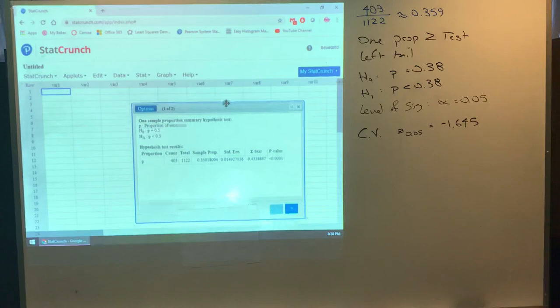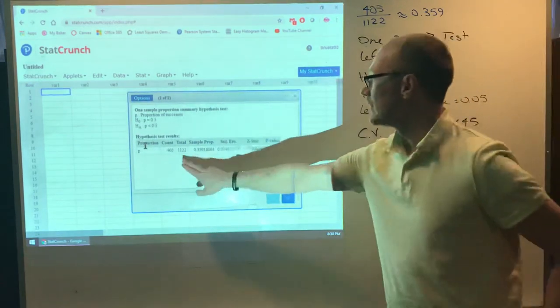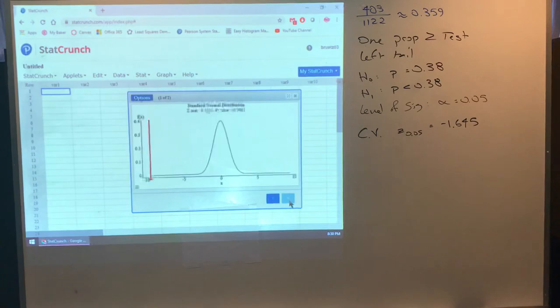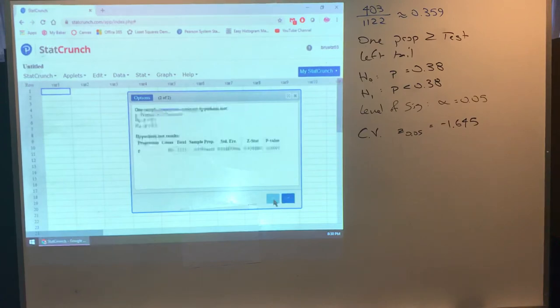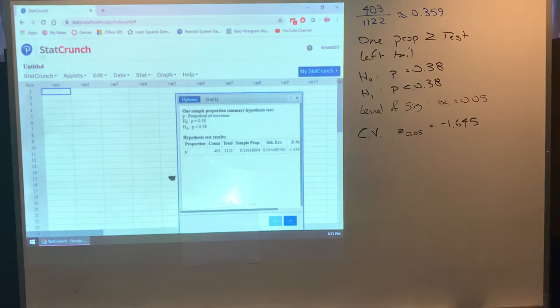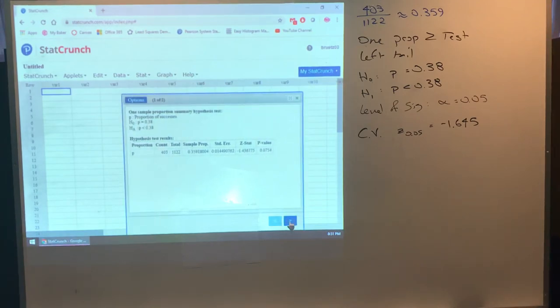And here it is. A couple of things to note. You can see the 403 out of 1,122. Oh, shoot. I did that wrong. It wasn't 0.5. It's supposed to be 0.38. I was thinking back to the previous one of cell phone. So now I compute, and there's my graph. That looks much better. So that's that. I'm going to go back to my slideshow now.